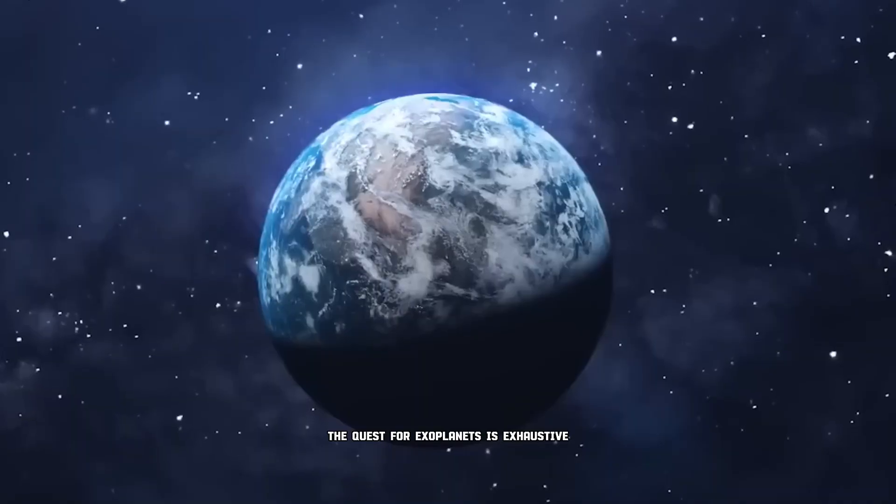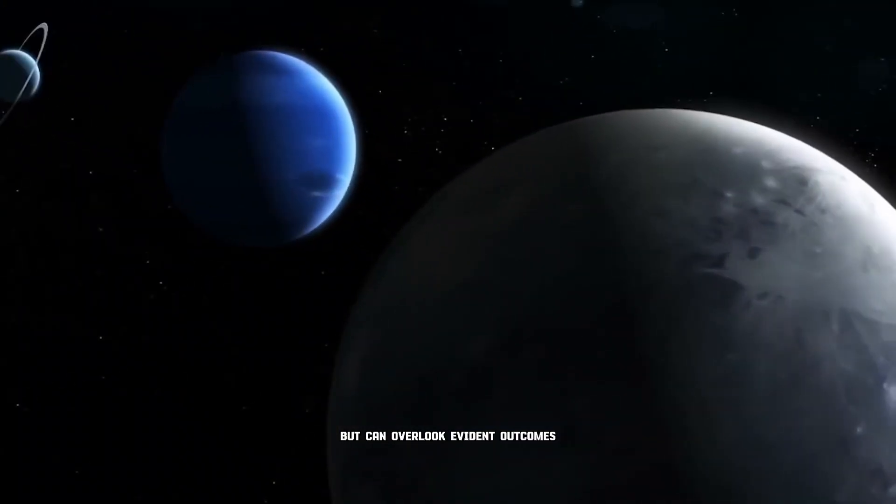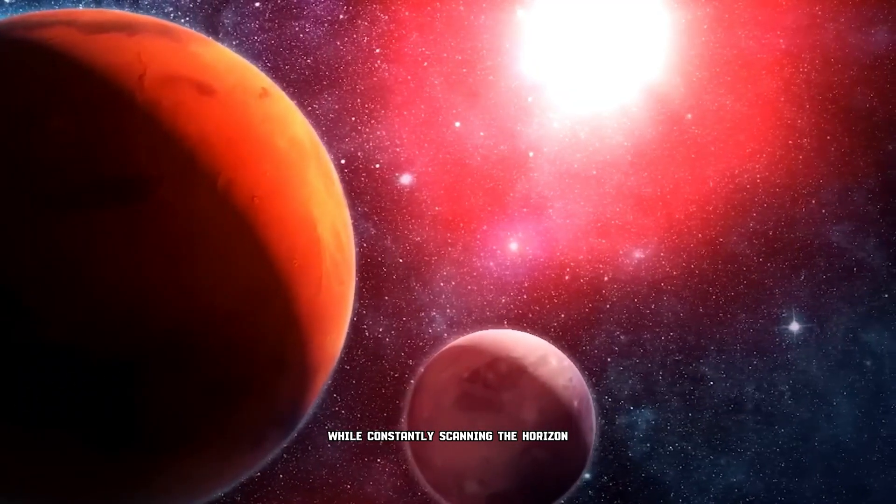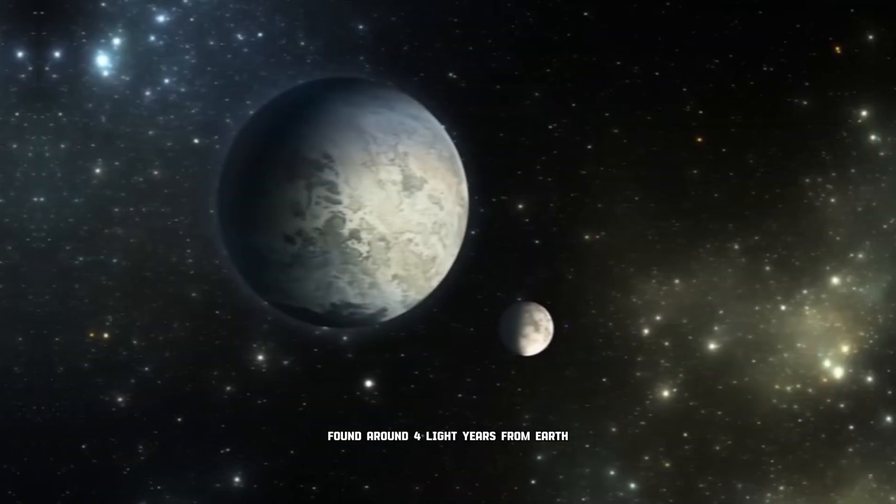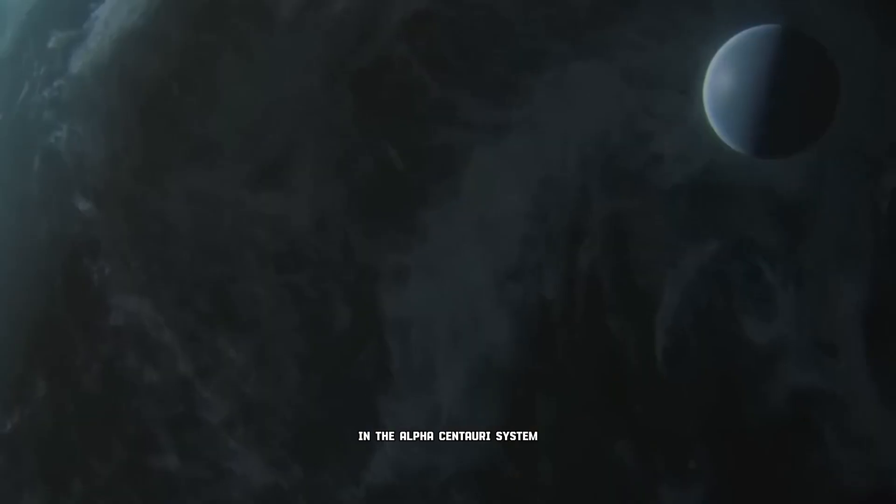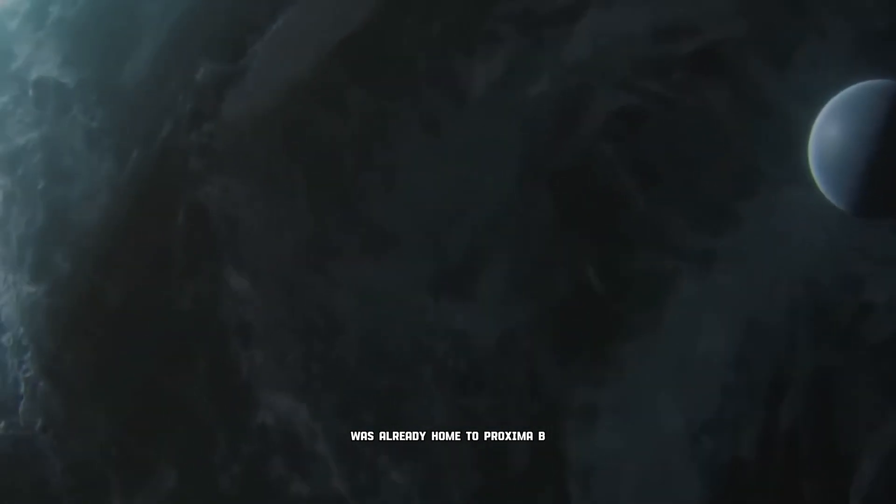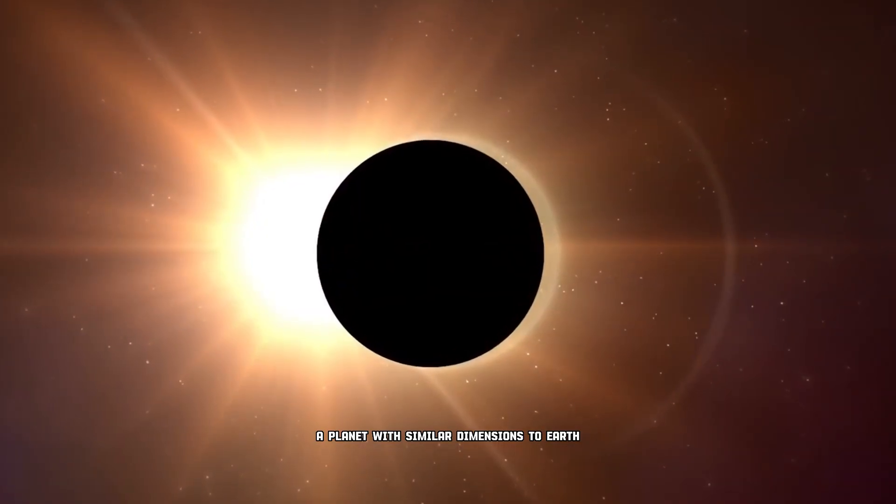The quest for exoplanets is exhaustive but can overlook evident outcomes while constantly scanning the horizon. Proxima Centauri, found around 4 light-years from Earth in the Alpha Centauri system, was already home to Proxima B, a planet with similar dimensions to Earth.